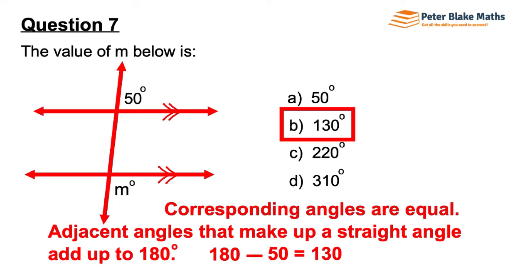There are a number of different ways to solve this question. What we've done here is use the straight angle of that diagonal transversal — the almost vertical line — and say 50 plus the angle below it adds up to 180 degrees. So we take 50 away to get 130 in the bottom right-hand corner of that top intersection, which is in exactly the corresponding position to M. You could also use corresponding angles to place 50 just above M, then take 50 away from 180 at that bottom intersection.